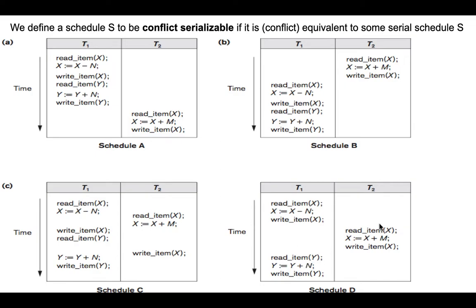Those are the only conflicting operations. The read Y and write Y in T2 don't conflict with other operations because there is no corresponding write Y or read Y elsewhere to form a conflict. There were two conflicting operations and both occur in the same order in schedule A. Therefore, we conclude schedule D is conflict serializable because it is conflict equivalent to serial schedule A.